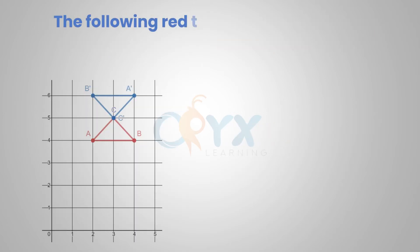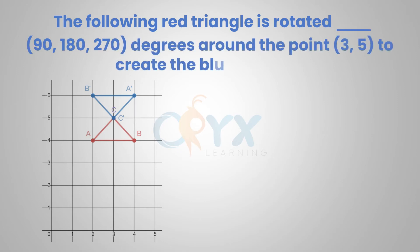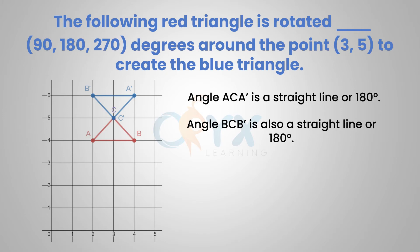The following red triangle is rotated either 90, 180, or 270 degrees around the point (3,5) to create the blue triangle. Angle ACA prime is a straight line, or 180 degrees. Angle BCB prime is also a straight line, or 180 degrees.